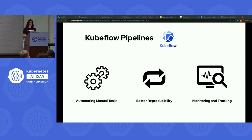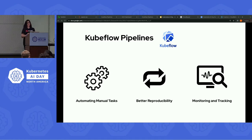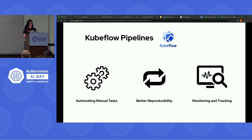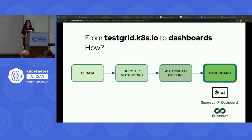Machine learning pipelines help automate manual and repetitive machine learning tasks, and also help create faster iteration cycles by parallelizing tasks. Pre-defined and automated components lead to better reproducibility and more consistent workflows. Pipelines can also help introduce better version control and monitoring of the machine learning code and artifacts, making it easier to monitor the iterations. Coming back to our workflow, in order to help developers and stakeholders view the KPIs, metrics, and aggregated results of their tests visually, we create automated dashboards which can help better analyze the status of multiple tests, investigate problematic tests, builds, or jobs.